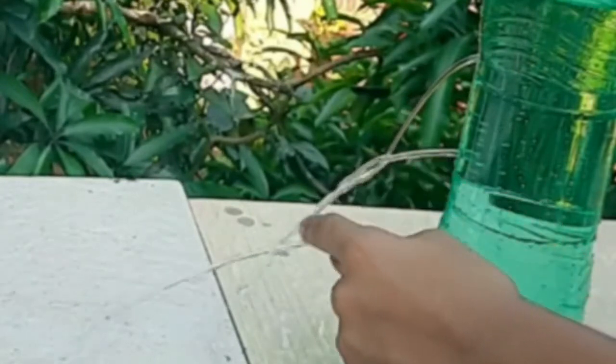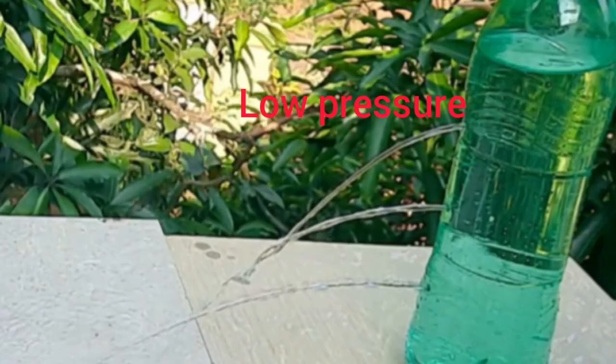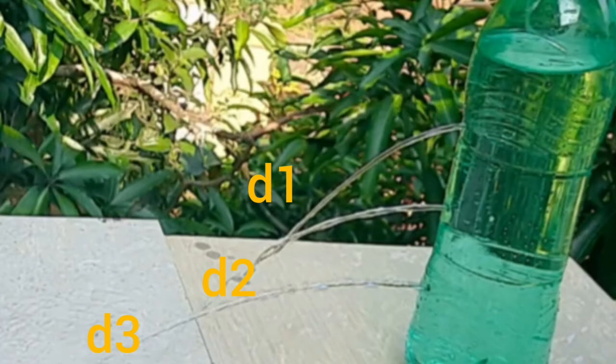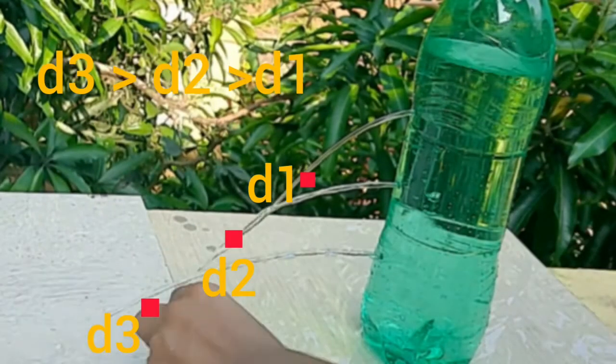Water comes out of the holes because of water pressure. Observe that the water from the uppermost hole falls at the shortest distance from the bottle—pressure is least here—whereas the water coming out of the lowest hole at the base falls with a greater speed and goes further. The pressure is maximum here. This means that liquid pressure increases with depth. The greater the depth of a point in a liquid, the greater its pressure.